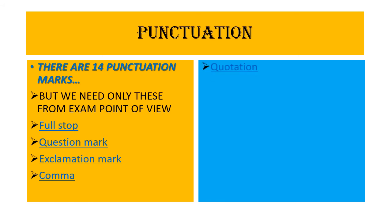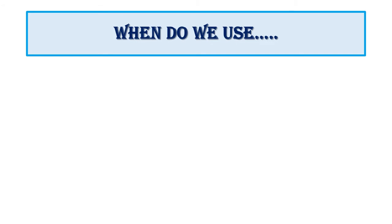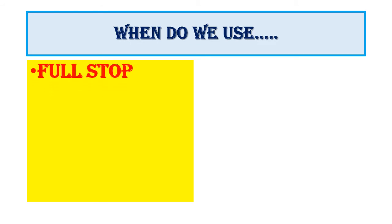The first punctuation is the full stop, also known as a period. It denotes the end of a sentence — the longest pause. It is mostly used for two types of sentences: assertive sentences and imperative sentences. It is also used in some abbreviations and to write email or web addresses.